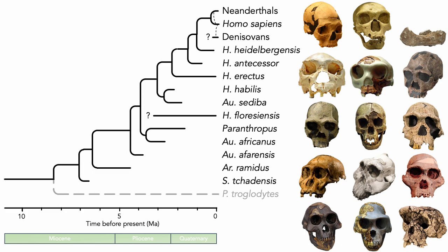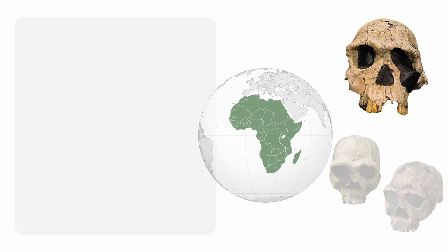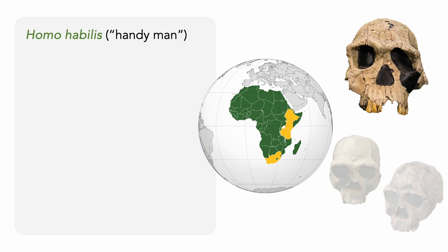Archaic humans are the species in the genus Homo other than us, the modern humans. Two of the earliest archaic humans were Homo habilis, the handyman, which lived in eastern and southern Africa from 2.4 to 1.4 million years ago, and Homo erectus, the upright man, which lived from 1.9 million to 110,000 years ago, originating in eastern Africa before spreading into northern and southern Africa as well as western and eastern Asia.